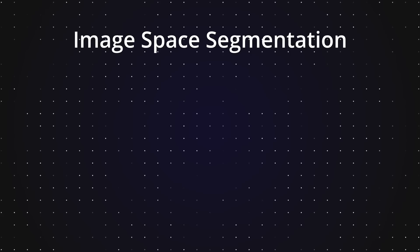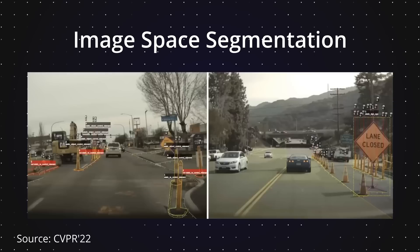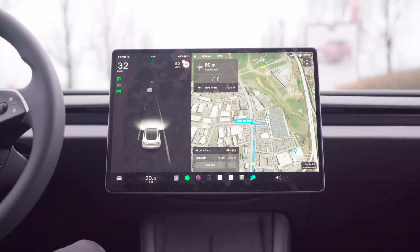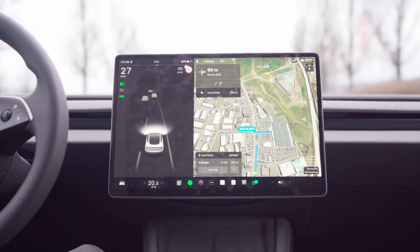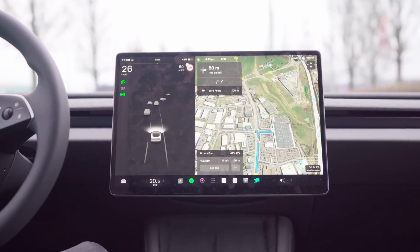The Tesla team started out with the image space segmentation method, classifying each pixel in the camera's view as either drivable space or not, based on 2D values. However, effective navigation in the real world requires the car's environment to be modeled in three dimensions. The image segmentation approach, while a start,